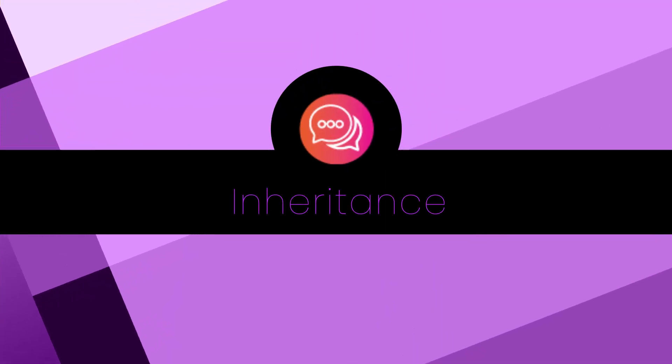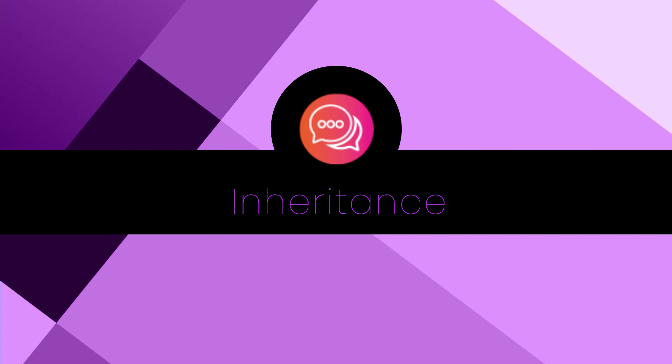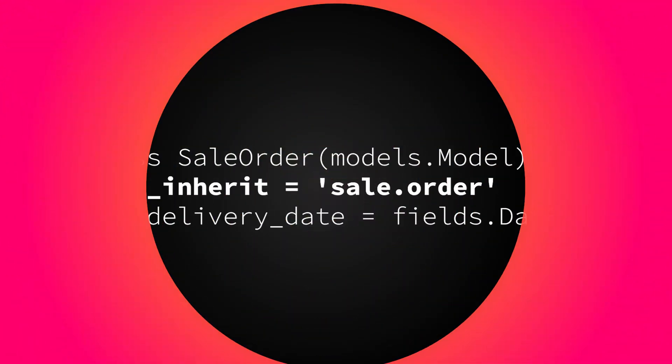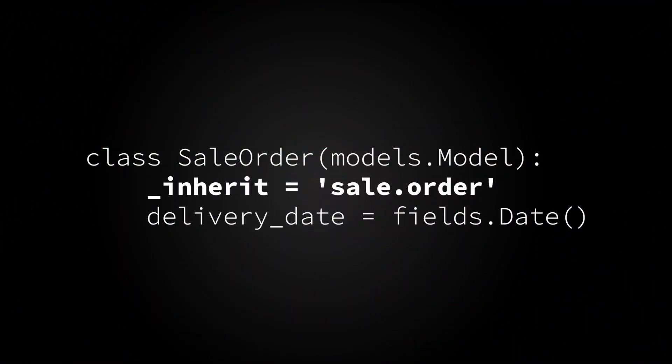Inheritance. Odoo's ORM supports several forms of inheritance, including classical inheritance, delegation inheritance, and extension inheritance. This allows for highly modular and reusable code, which makes for easier add-on development. In this example, the sale.order model is extended to add a new delivery date field. This field will be available on all sale orders alongside the fields defined in the original model.